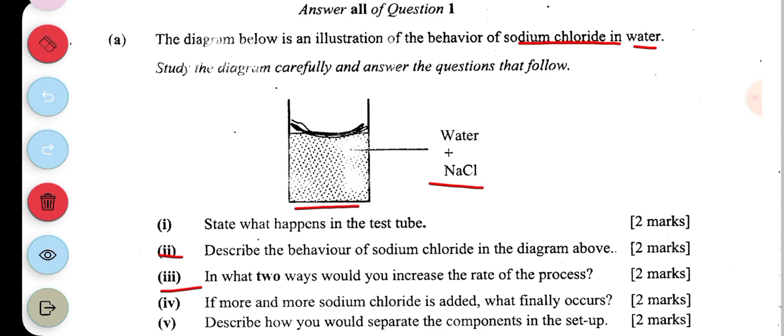Then part four is saying if more and more sodium chloride is added, what's finally occur? So you actually form a saturated solution. So the sodium chloride will no more dissolve.